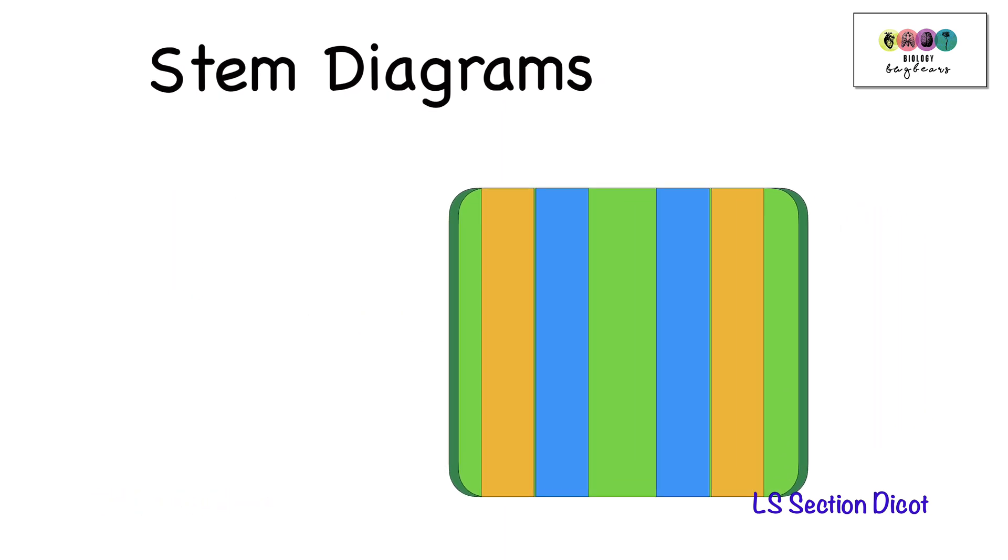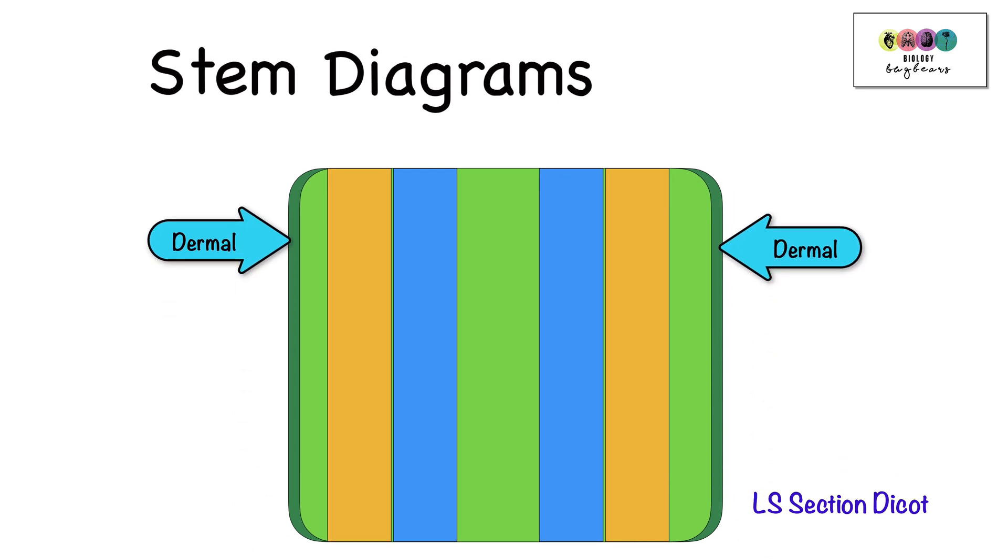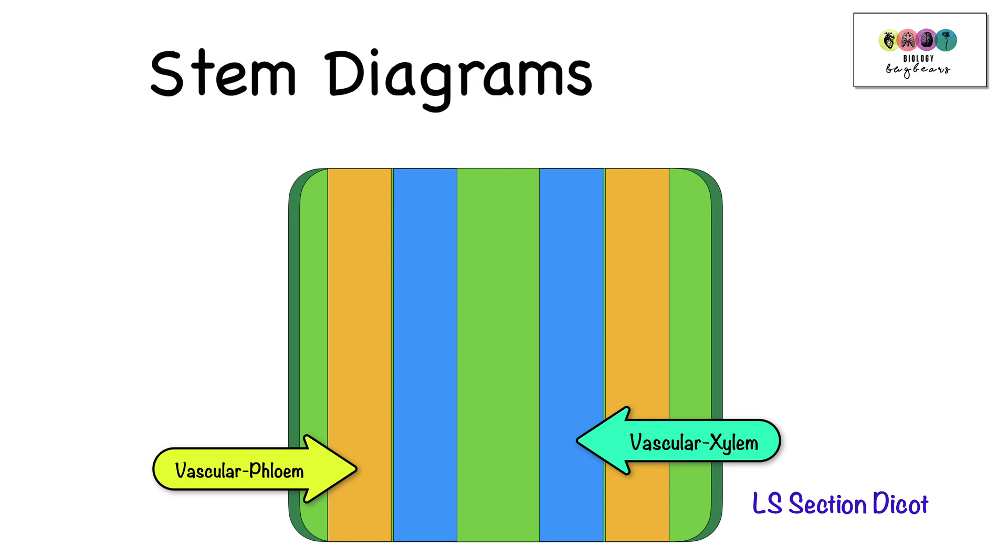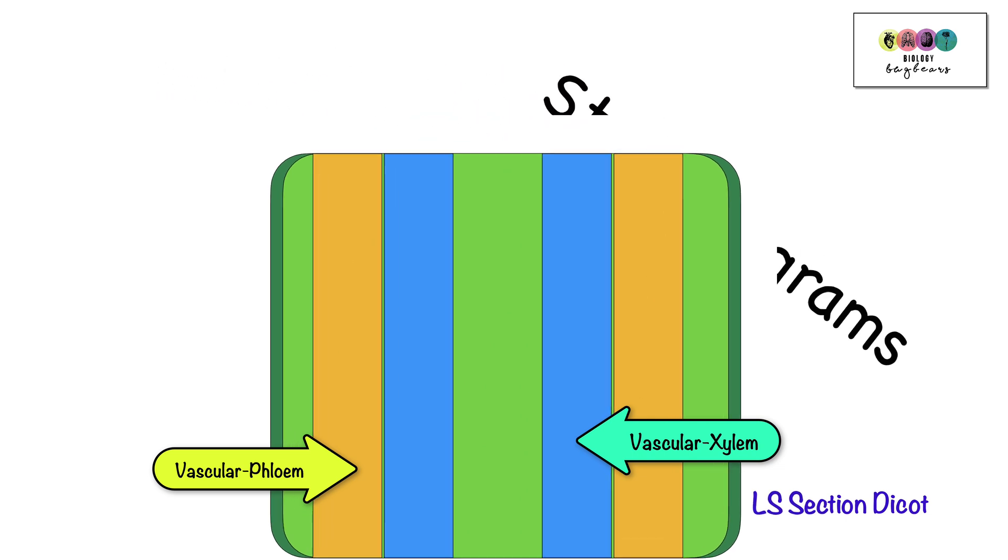So finally, we have the LS section of the dicot stem, the longitudinal section. You've dermal tissue towards the outer edges, ground tissue just inside that and in the center of it. And then you have finally the vascular tissue made up of the xylem towards the center and the phloem towards the outer edges.